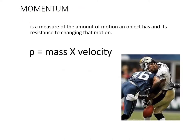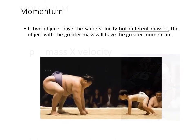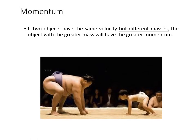We now look at momentum, which by definition is a measure of the amount of motion an object has and its resistance to changing that motion. It's comprised of mass times velocity and has the abbreviation P. So momentum equals mass times velocity. If two objects have the same velocity but different masses, the object with the greater mass will have the greater momentum. If those two sumo wrestlers move at the same velocity, the gentleman on the left with the bigger mass has greater momentum.